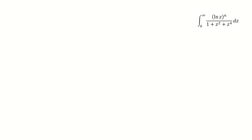We will work on the complex plane, so here we use c as a variable instead of x. The idea is we construct a function h, which is here, and h is a function of a. Here we require a is between negative 1 and 3. Maybe you want to ask why we require a is inside this interval, and I will show you the reason later.